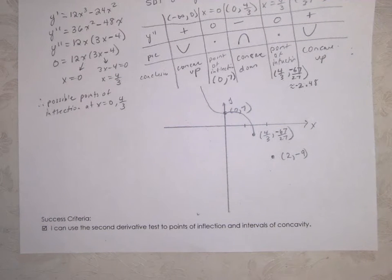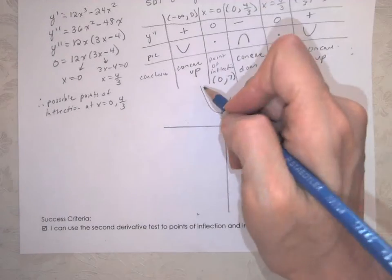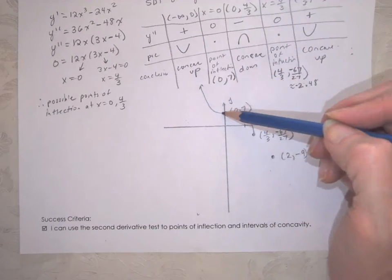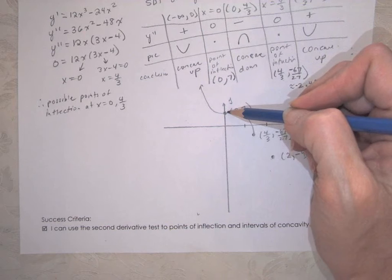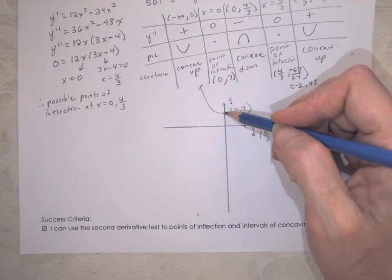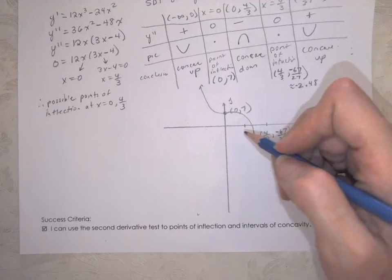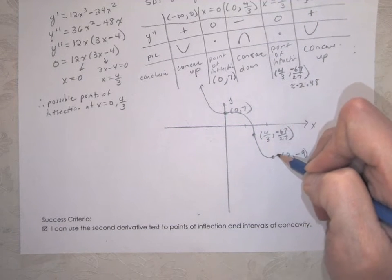Hi, sorry it cut off. So we had drawn using the second derivative - we were concave up from negative infinity to zero, concave down from zero to four over three, and then concave up after that.